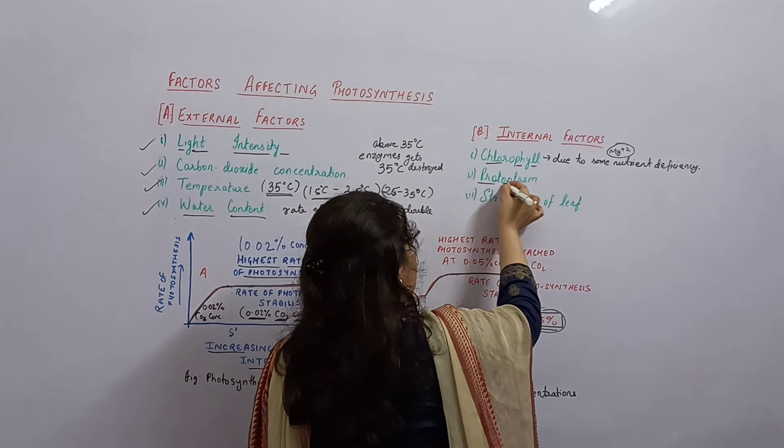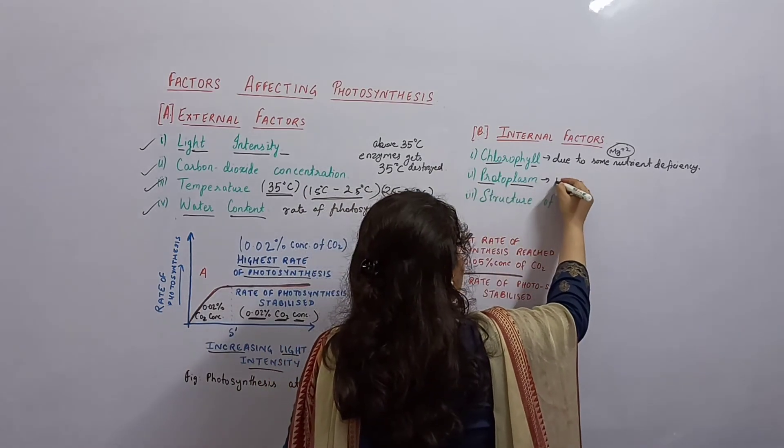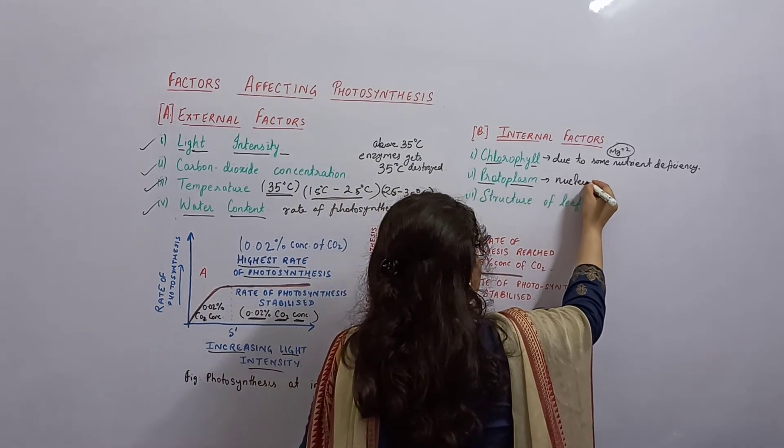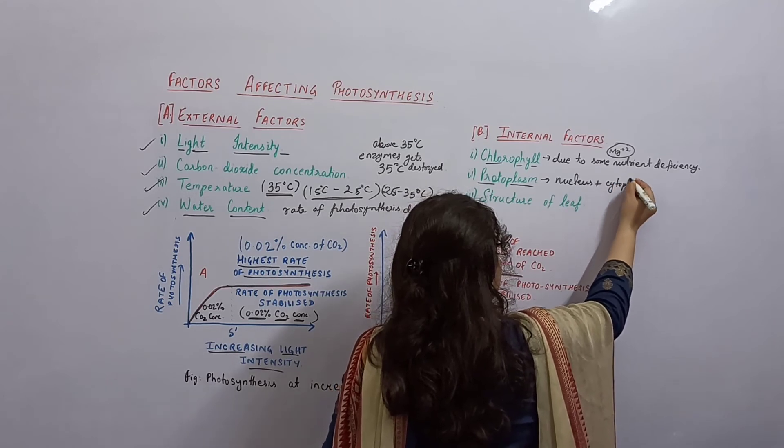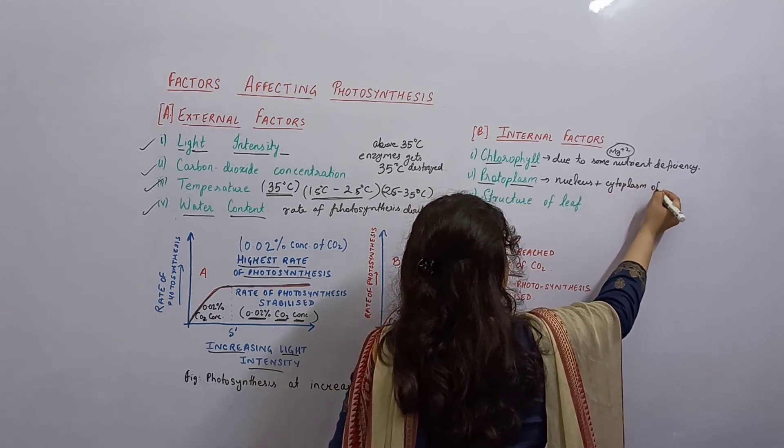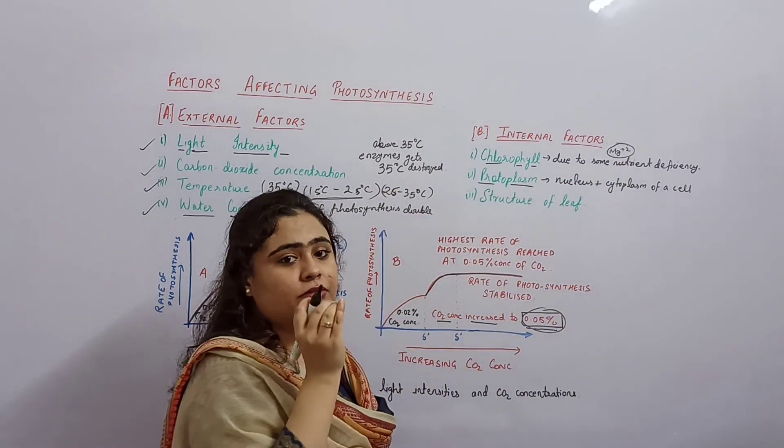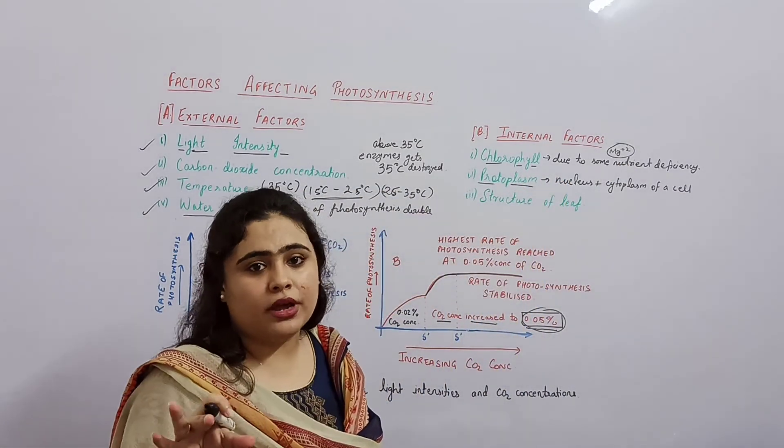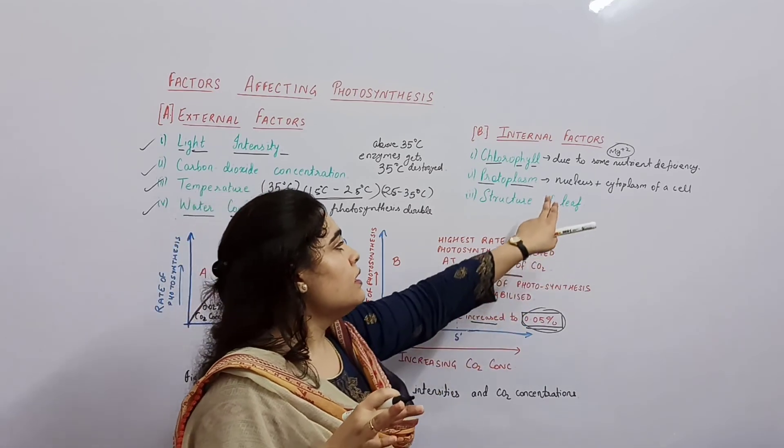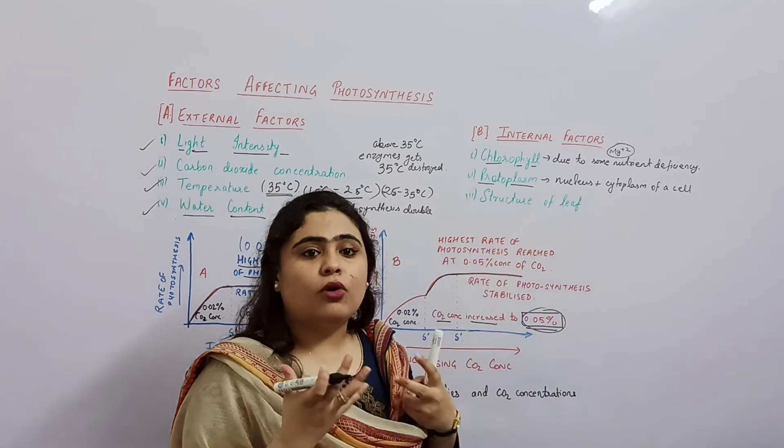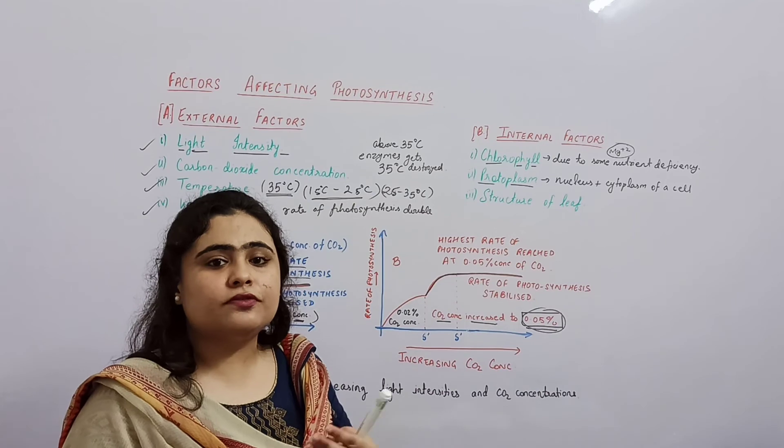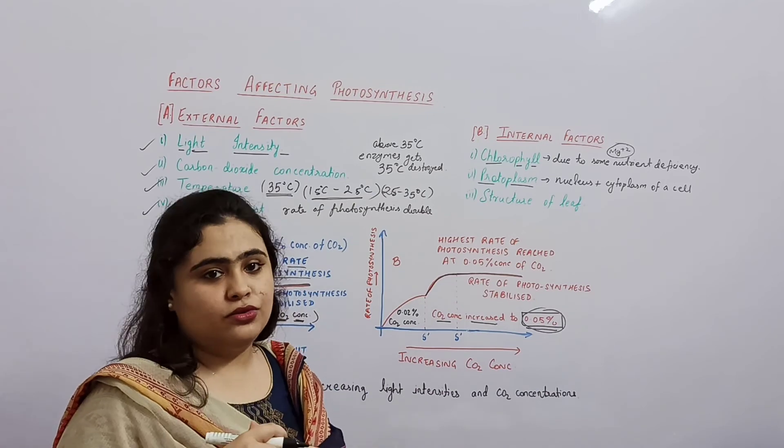Then discuss about protoplasm. What is protoplasm? Nucleus plus cytoplasm of a cell. If protoplasm becomes dry, cytoplasm becomes dry, then photosynthesis cannot occur because water content is not available and protoplasm becomes dry.